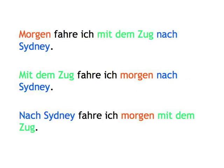Now let's see what happens when you start with one of the TMP elements. Very often we put the time at the beginning of the sentence. Occasionally we put manner, and very occasionally place, at the beginning — usually for emphasis when that idea has been mentioned before. The finite verb's second element rule applies then, and we use intonation to further emphasize what we regard as important. Morgen fahre ich mit dem Zug nach Sydney. Mit dem Zug fahre ich morgen nach Sydney. Nach Sydney fahre ich morgen mit dem Zug.